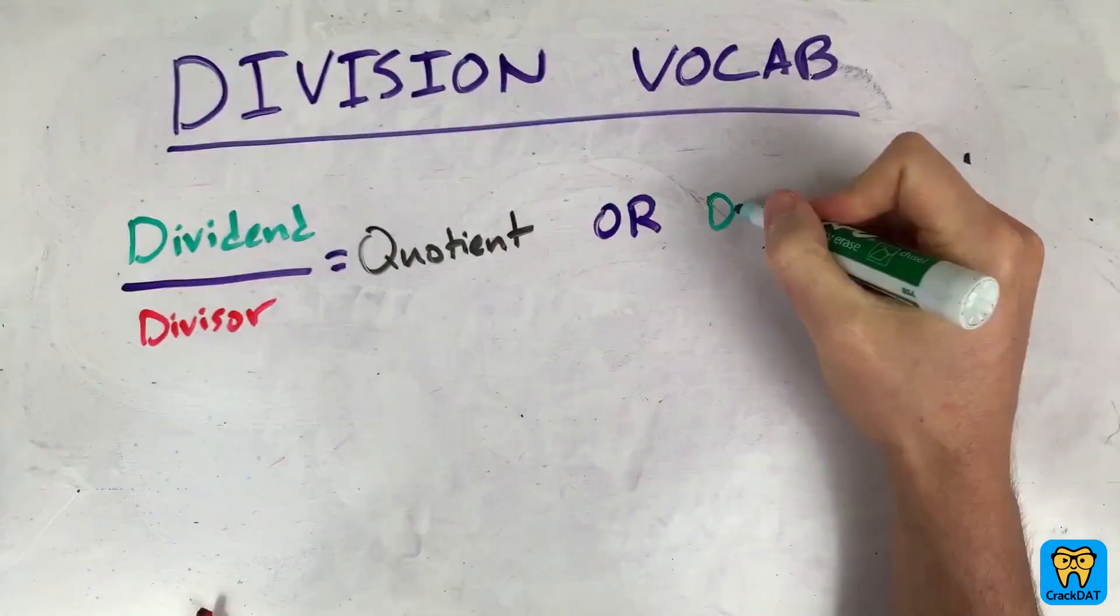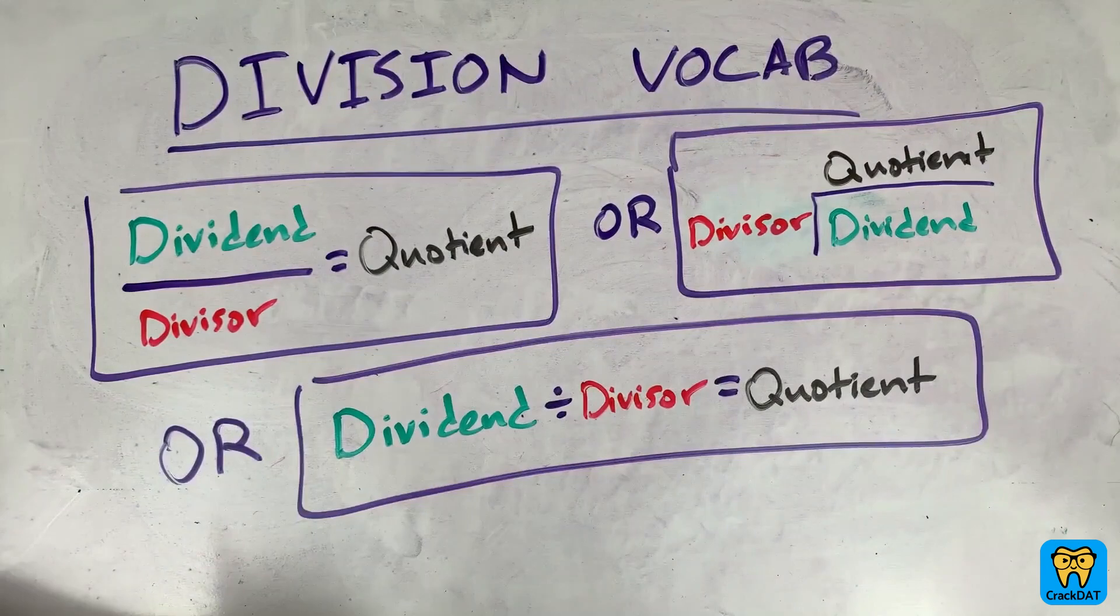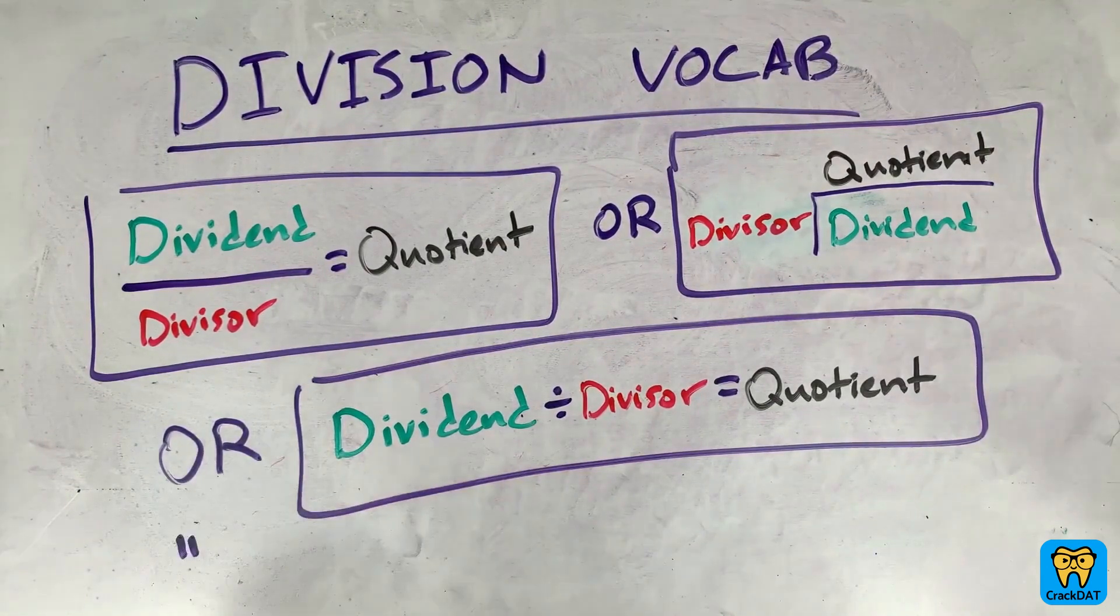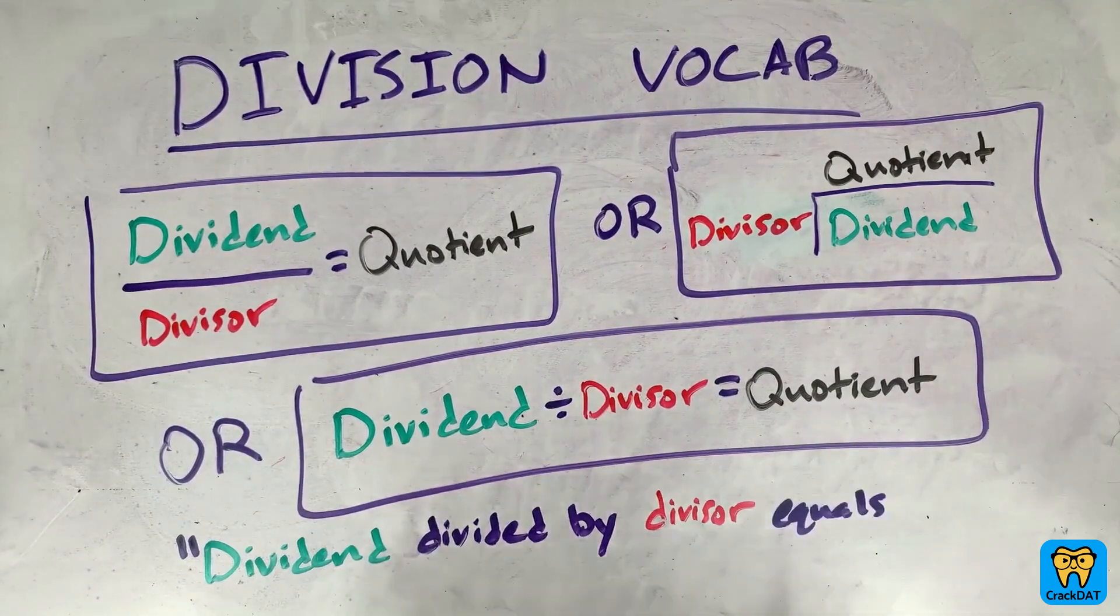Written out, the division problem could look like any of these three ways to write division. In each case, however, the symbols are saying that the dividend divided by the divisor equals the quotient.